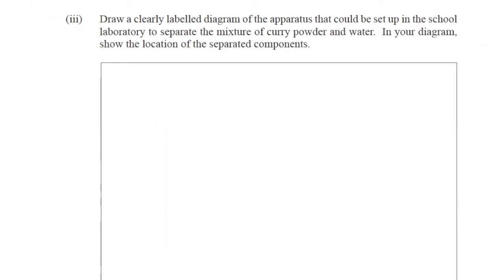Part three. Draw a clearly labeled diagram of the apparatus that could be set up in the school laboratory to separate the mixture of curry powder and water. In a diagram, show the location of the separated components. All right. So we just need to draw the setup for filtration. So we'll need our filter funnel. And you'll be using a ruler to do this with a pen to say aligns with the street. That's our filter funnel. This is our flask collecting the filtrate.